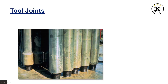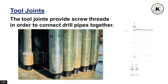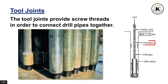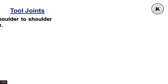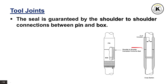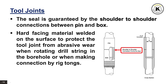Tool joints provide screw threads in order to connect drill pipes together. The seal is guaranteed by shoulder-to-shoulder connections between pin and box. Hard-facing material is welded on the surface to protect the tool joint from abrasive wear when rotating the drill string in the borehole or when making connections with rig tongs. This layer of hard-facing material can be replaced in workshops when depleted due to excessive wear.